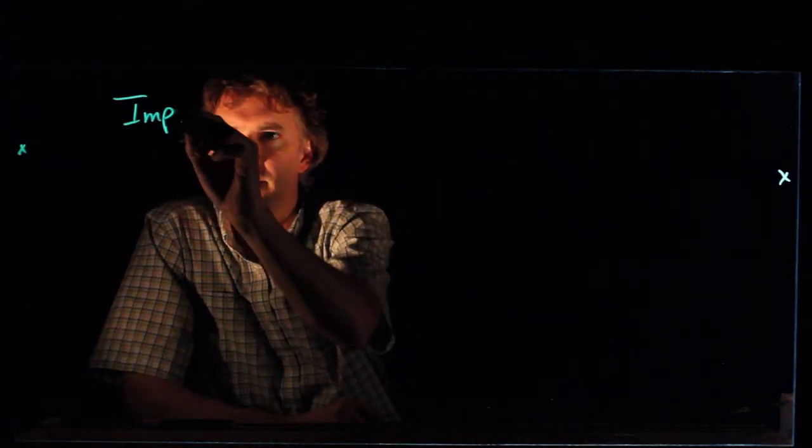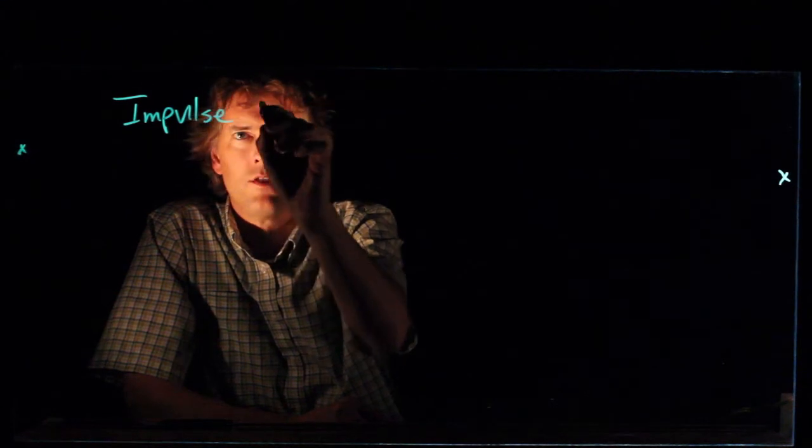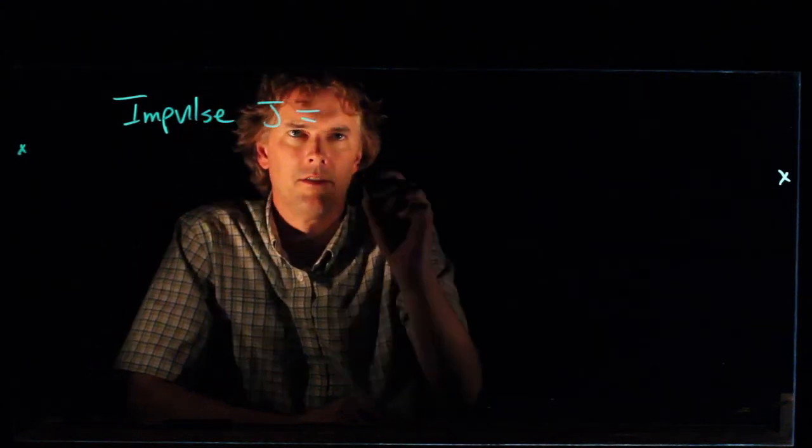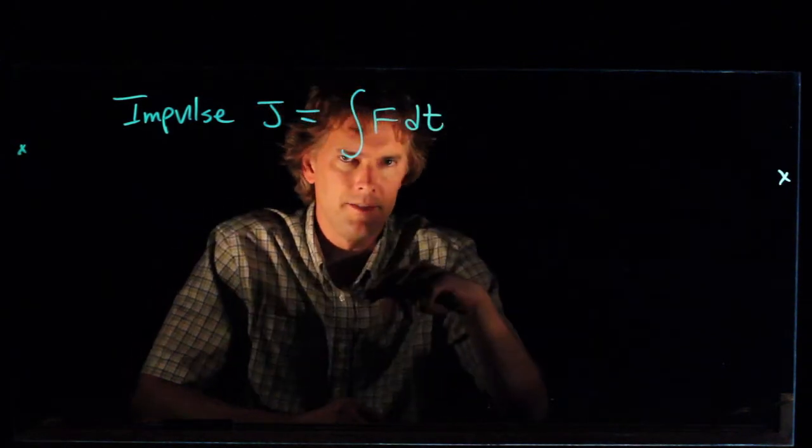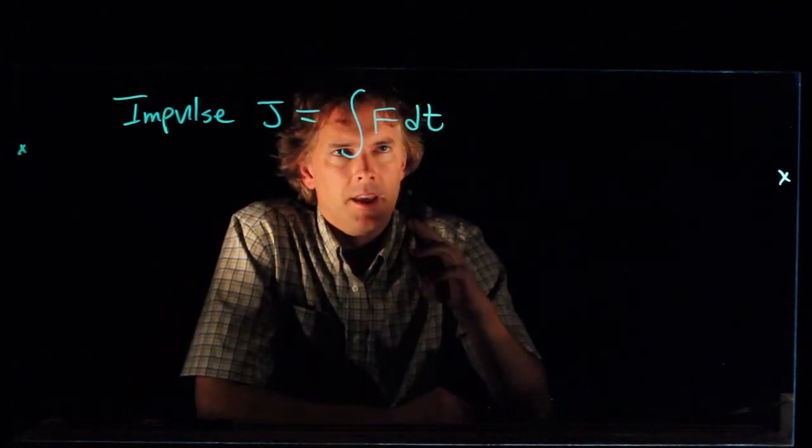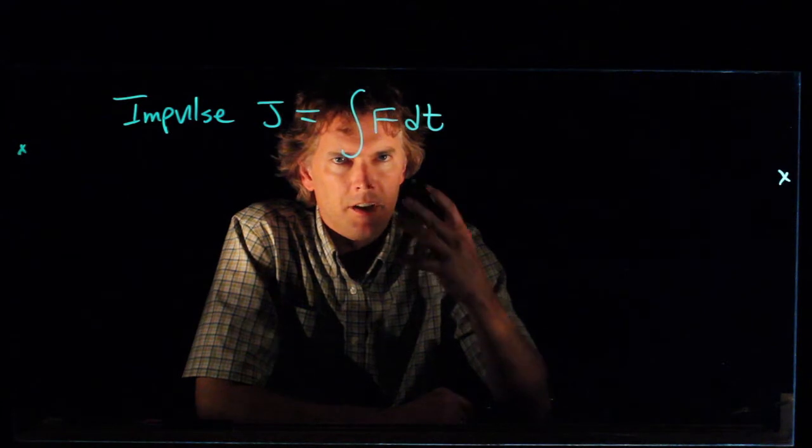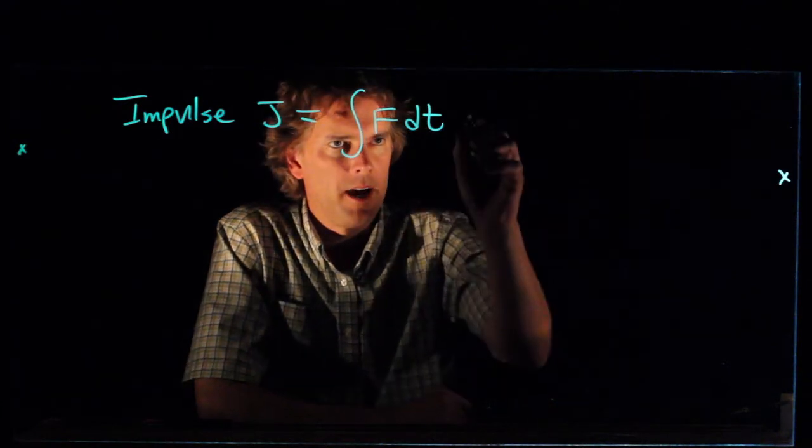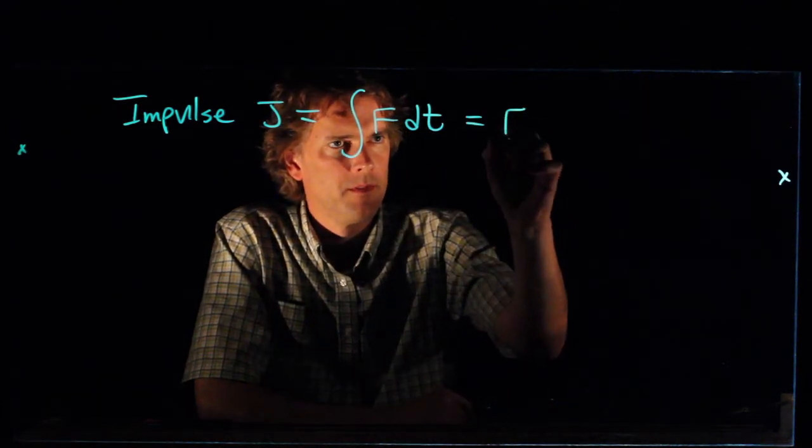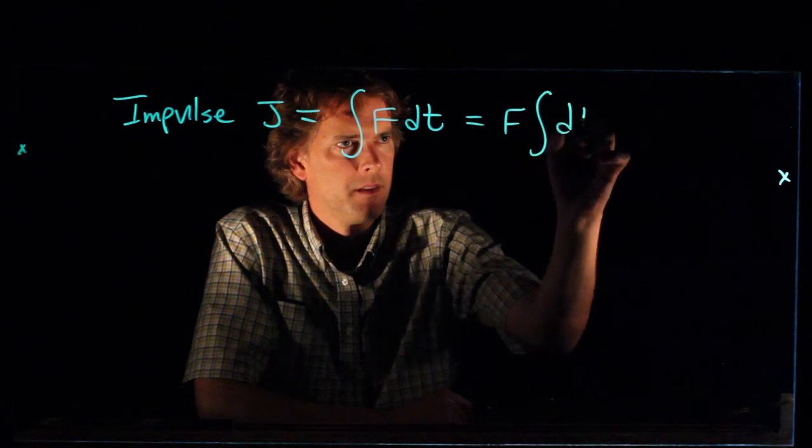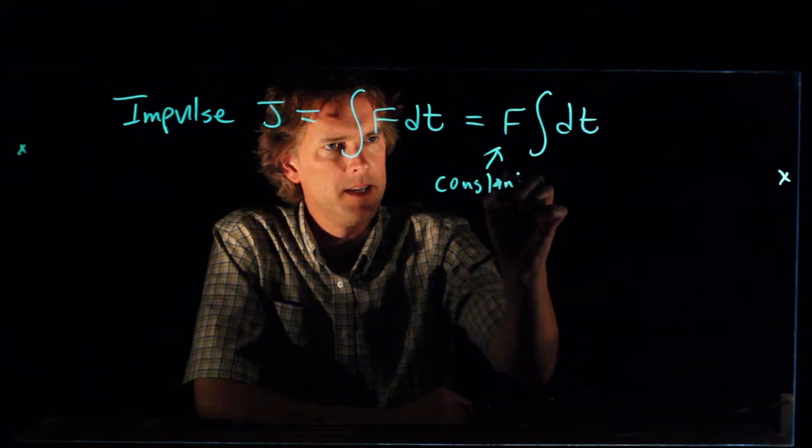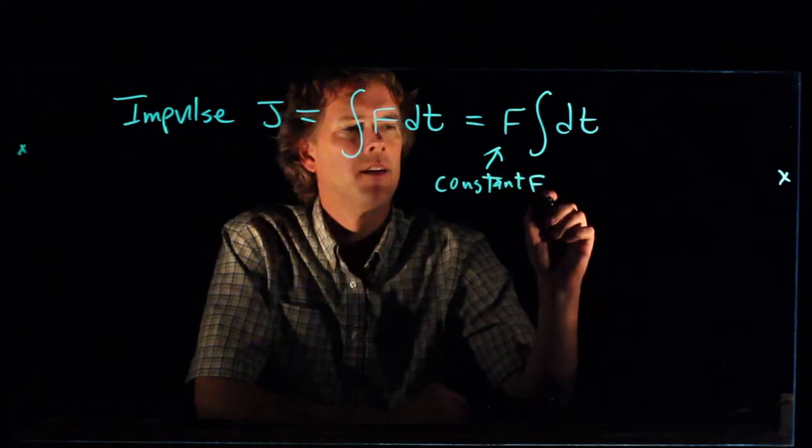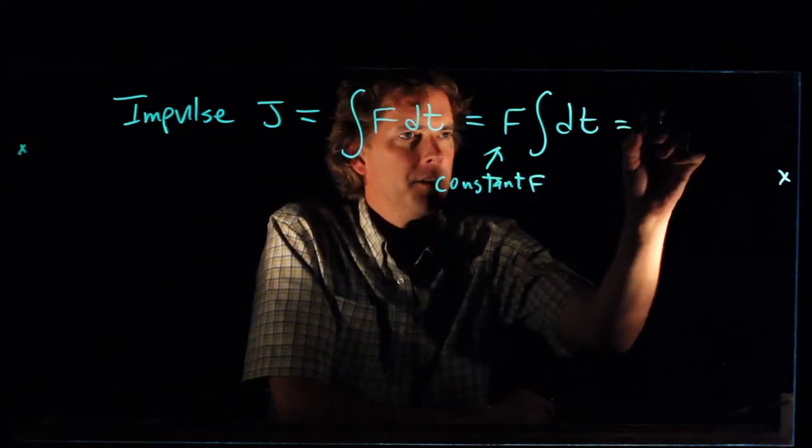Impulse j is equal to the integral of f dt. Now, in the case where f is a constant, it can come right out of the integral, and if you integrate dt, then you just get delta t.